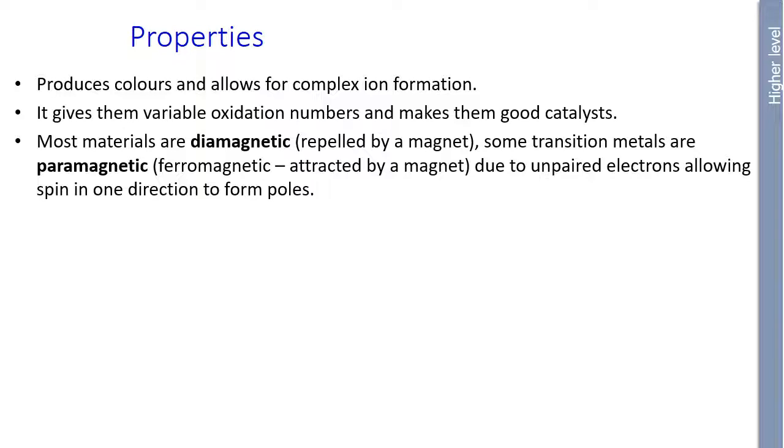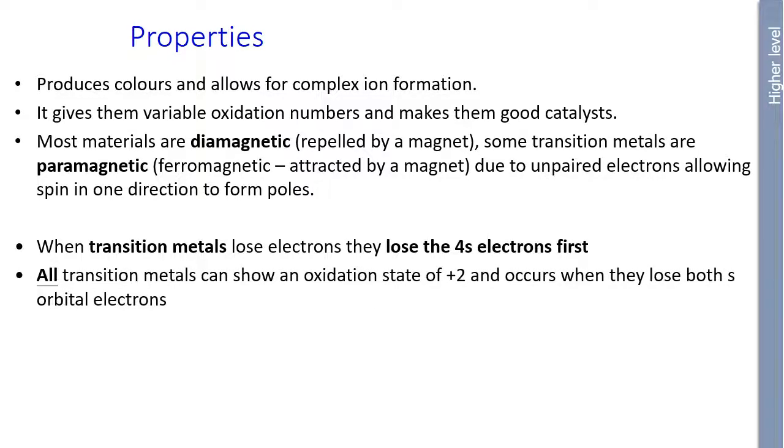Most materials are diamagnetic, when I say diamagnetic, I mean they are repelled by a magnet. But some transition metals are paramagnetic, attracted to magnets. And this is, of course, due to unpaired electrons allowing spin in one direction to allow those magnetic poles to form. And when transition metals lose electrons, they lose these 4S electrons first. And all transition metals can show the oxidation of plus two because they've lost these two 4S electrons.